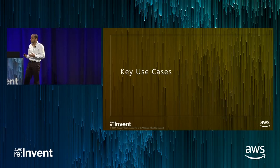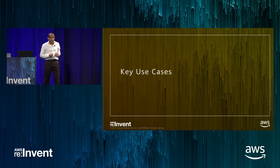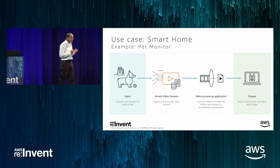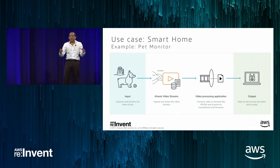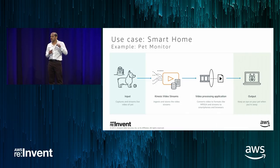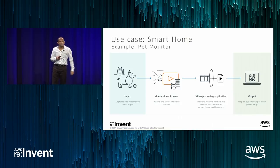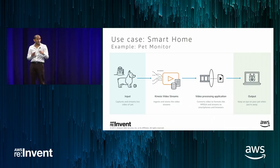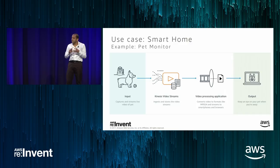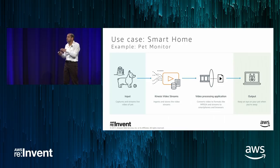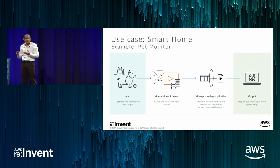Why did we go about doing all of this? Key motivations came from several customer use cases. One use case we learned about from a variety of customers was how to make homes smarter. About 25% of you here today have some variety of a home security camera device, and with the proliferation of image sensors across a variety of devices, customers really want to attach intelligent analytics to these incoming video streams to build things that are ultimately of customer value.